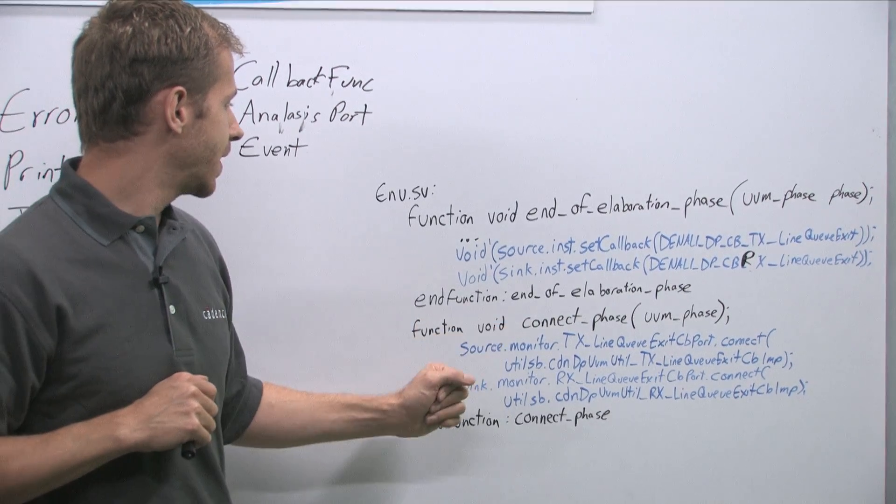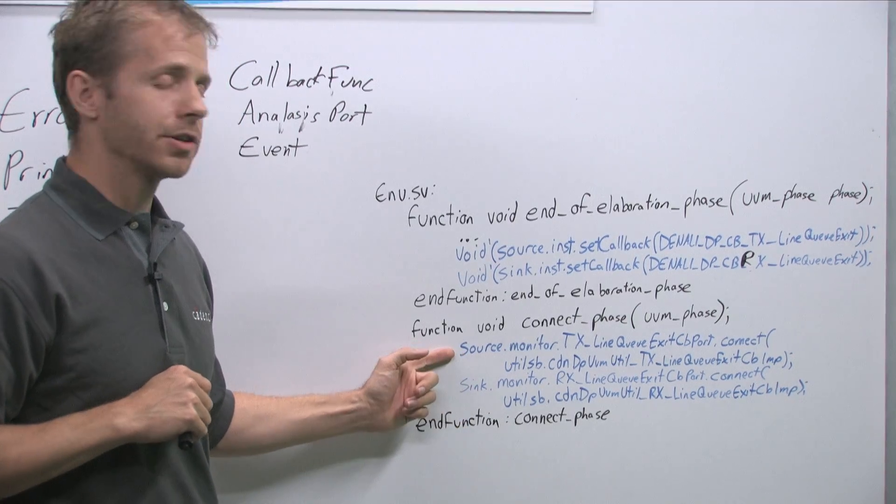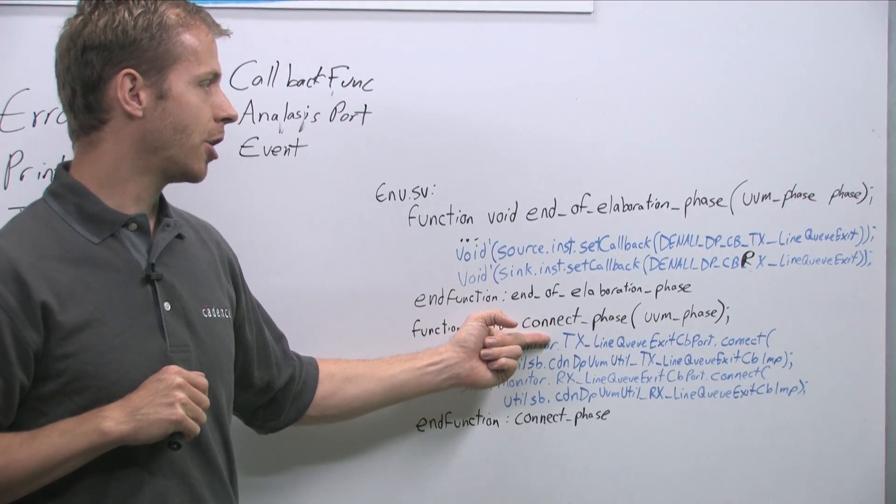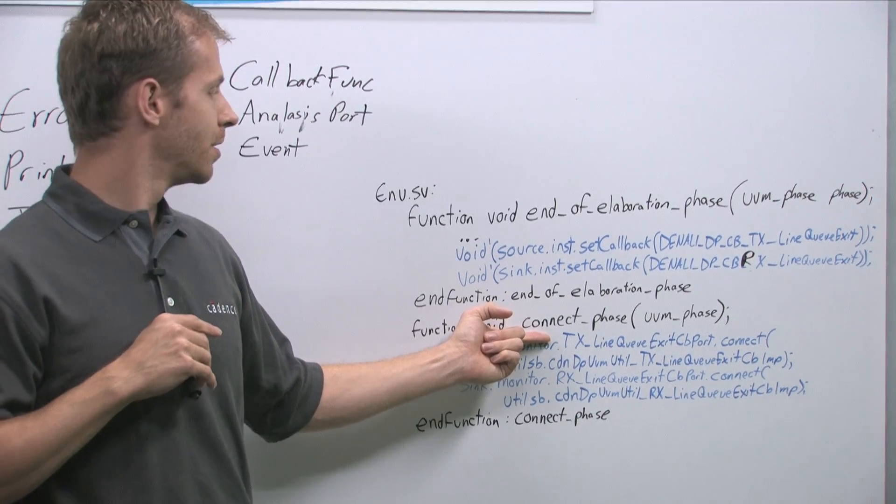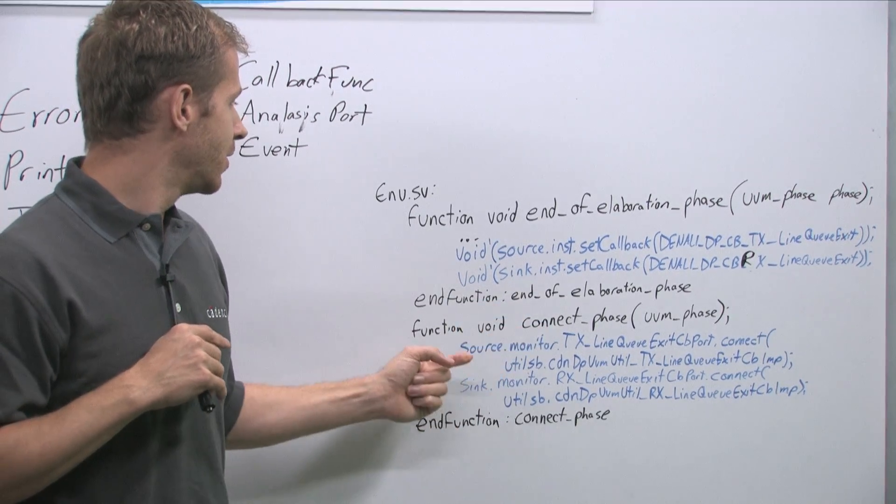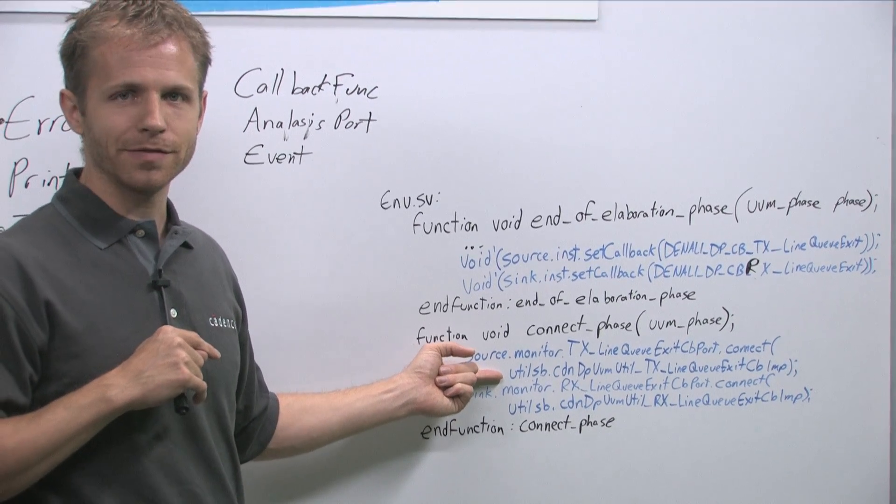But here in the connect phase, we're connecting the sources TX line queue exit callback port. Again, every callback has an associated port already set up for you. So we're connecting that to our scoreboard's implementation of the same.